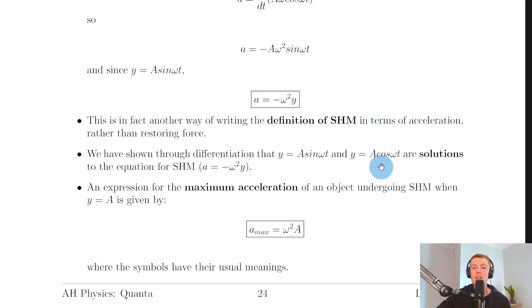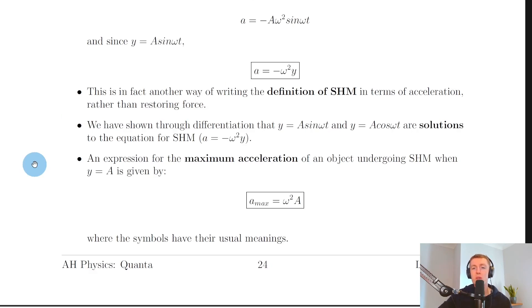So we equally could have started with y equals a cos omega t and derived the velocity expression and the acceleration expression to end up with the same relationships that we got. Now just like we did for velocity where we derived an expression for the maximum velocity and the velocity in general, we can do the same here.